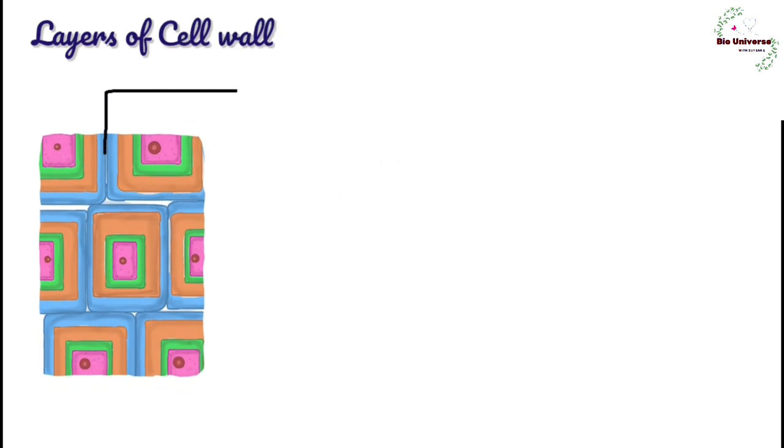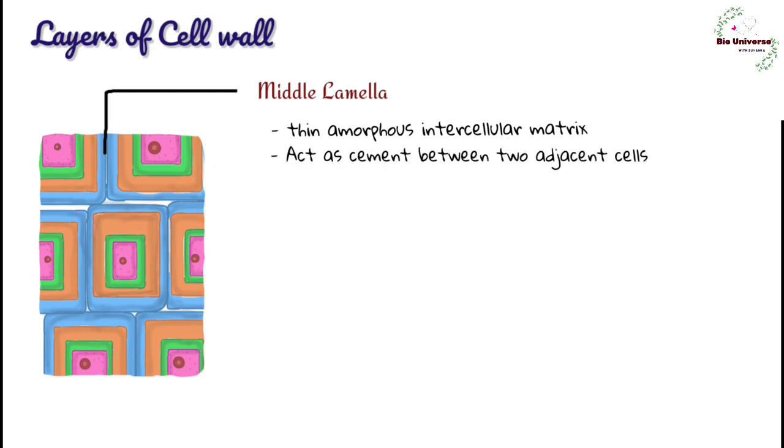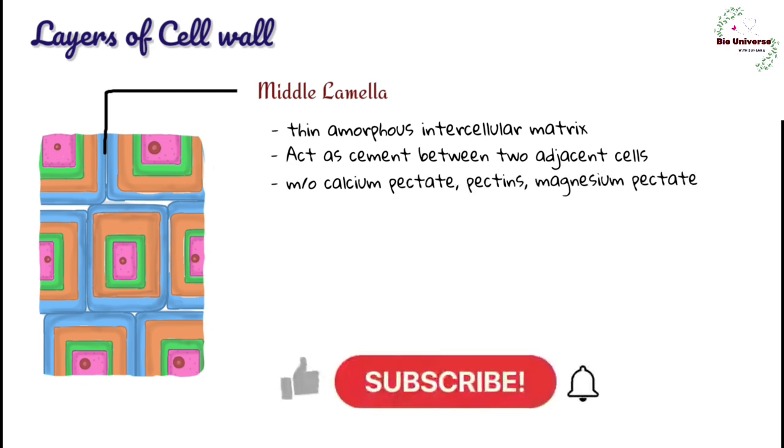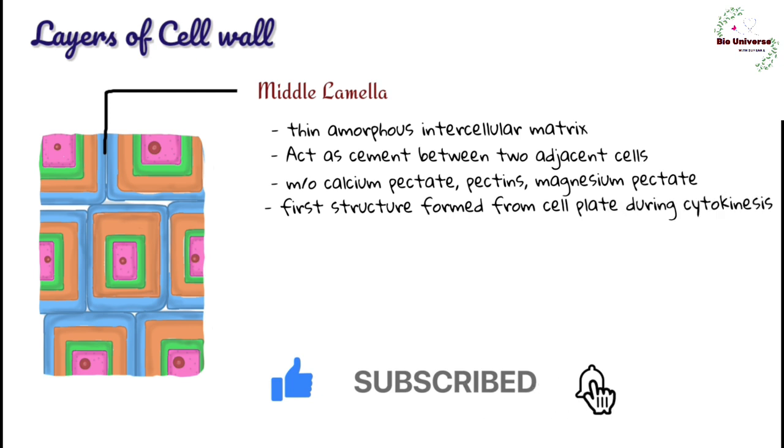Components of cell wall A. Middle lamella, it is thin amorphous intercellular matrix between two adjacent plant cells that functions as a cement between them. It is made up of calcium pectate, pectins and magnesium pectate. It is first structure that is formed from cell plate between the newly formed daughter cells at the time of cytokinesis.